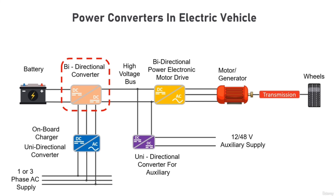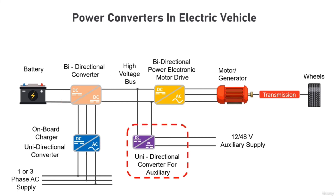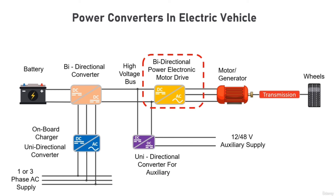The battery converter controls the charging or discharging of the traction batteries by either drawing or feeding power from the high-voltage bus — hence the battery converter is a bidirectional DC-to-DC converter. Similarly, the auxiliary battery converter is used to charge the auxiliary battery by drawing power from the high-voltage DC bus.